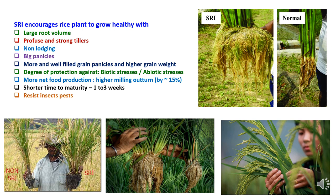There will be big panicles and more well-filled grain panicles with higher grain weight, because plants receive better nourishment and less competition due to wider spacing. In SRI method, there will be a degree of protection against biotic stresses like pests and diseases, and abiotic stresses such as drought, storm damage, and extreme temperature conditions. There will be more net food production, with milling out-turn increased by more than 15% compared to traditional rice cultivation, and shorter time to maturity of 1 to 3 weeks. SRI also allows rice to absorb soil nutrients naturally, helping it resist insects.